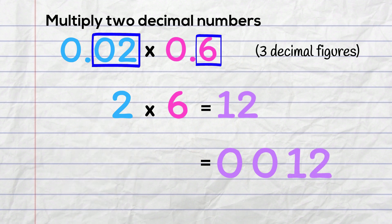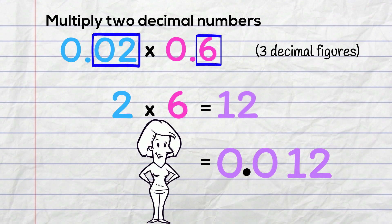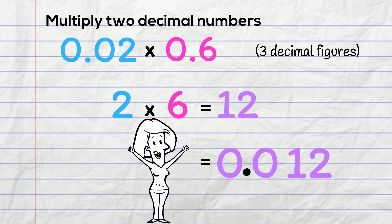Starting from the right, we count to the left. 1, 2, 3 figures and here's the decimal point. 0.012—I have 3 figures here. We're all done! And that's it!